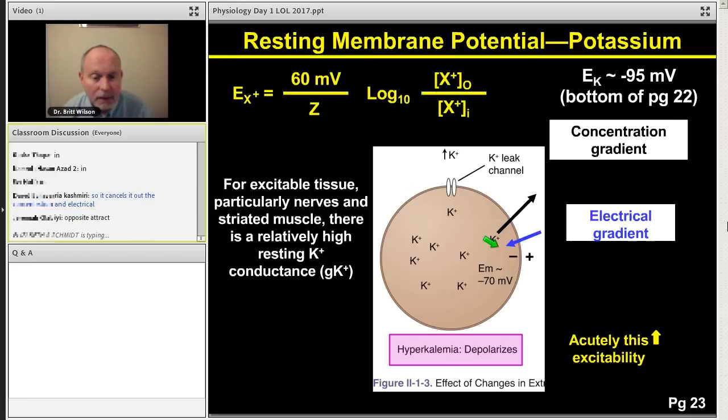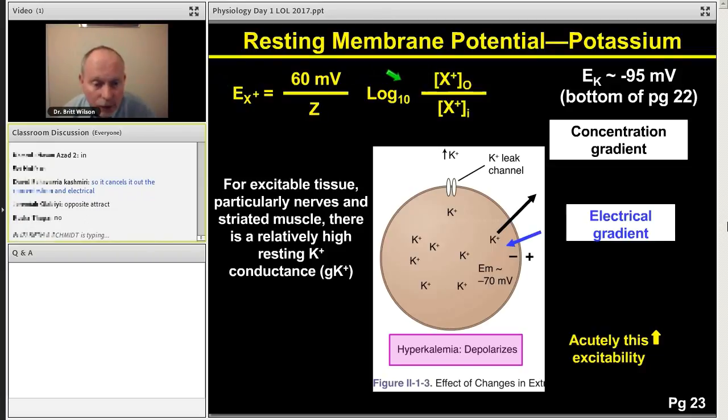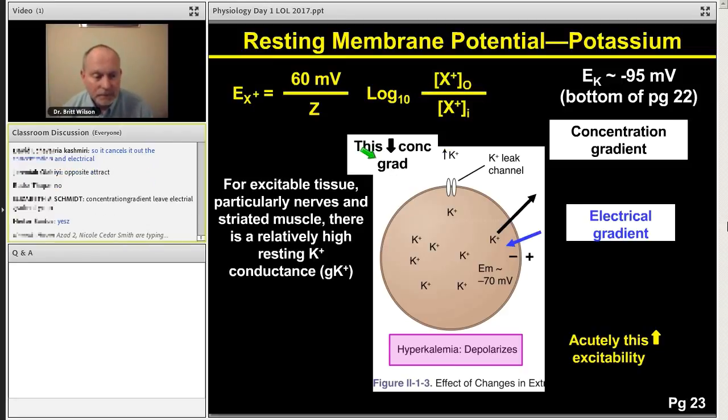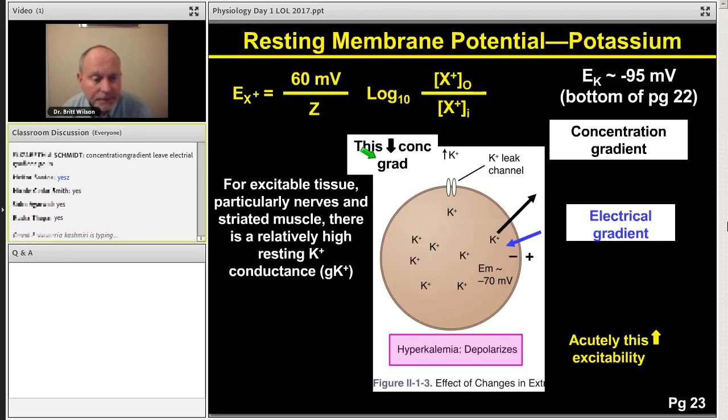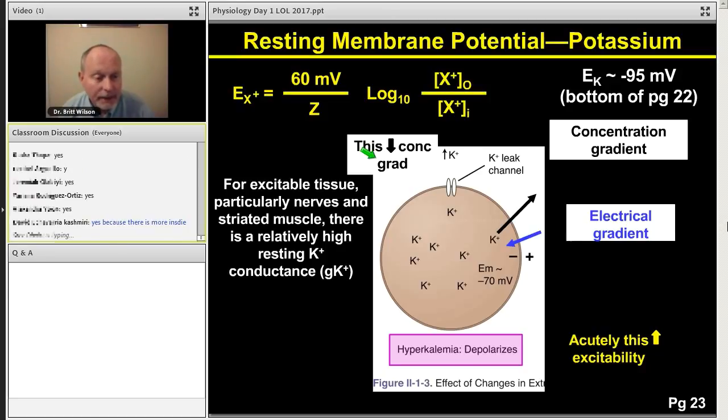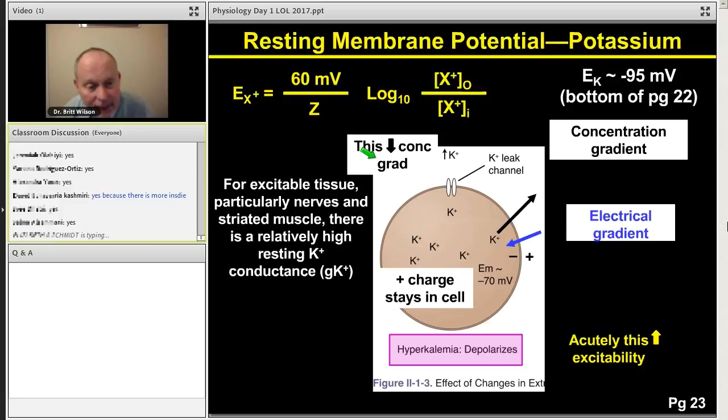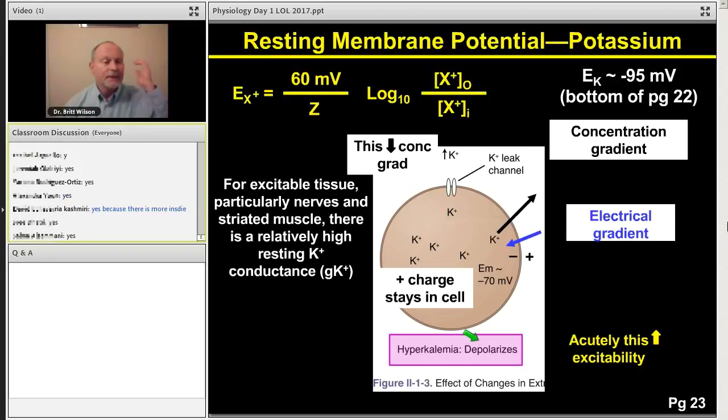Now, hyperkalemia will depolarize. If you love math equations, plug it in, and the change in equilibrium potential will tell you. If you don't want to use the math, if you don't want to memorize this, let me show you an easy way to remember. Hyperkalemia means increased potassium outside the cell. So do you agree that if I increase potassium outside the cell, this decreases the concentration gradient? If there's less of a concentration gradient, then maybe some of that positive charge is going to stay in the cell. Well, positive charge in the cell, depolarize. This is the easy way to remember.